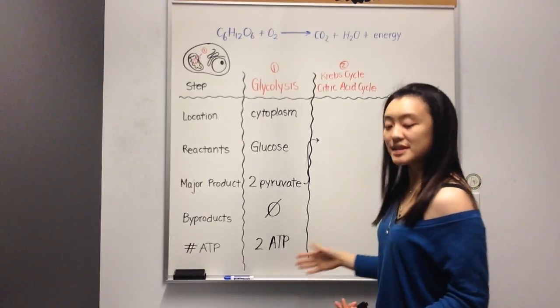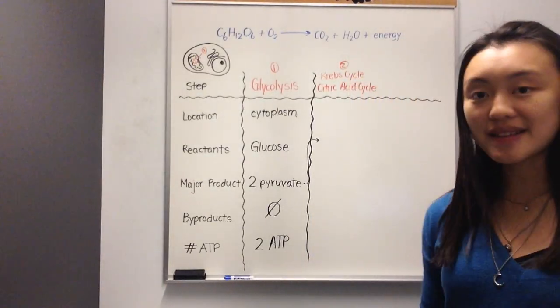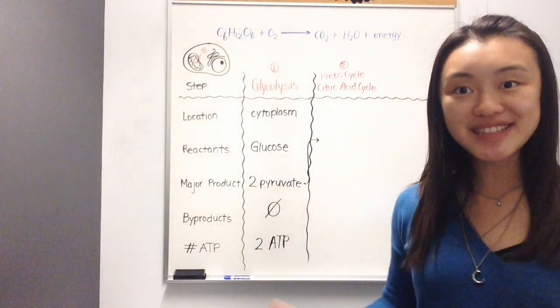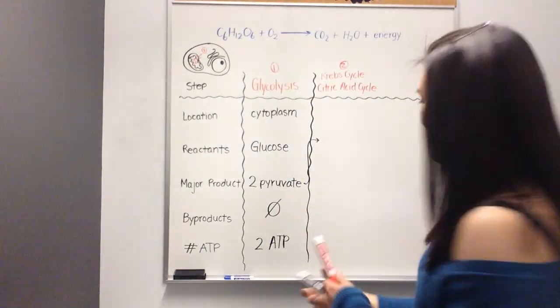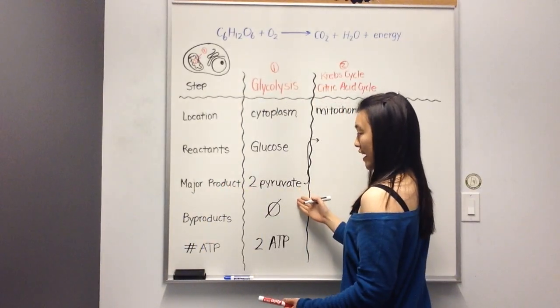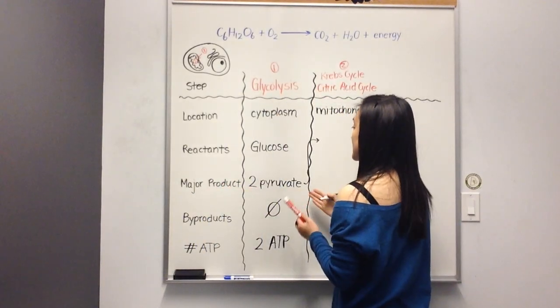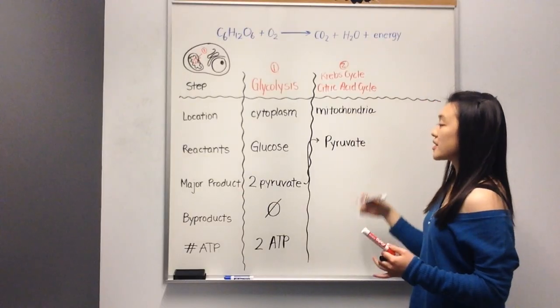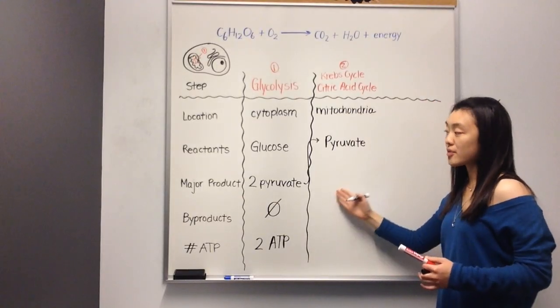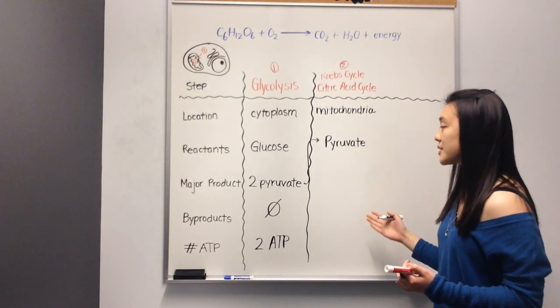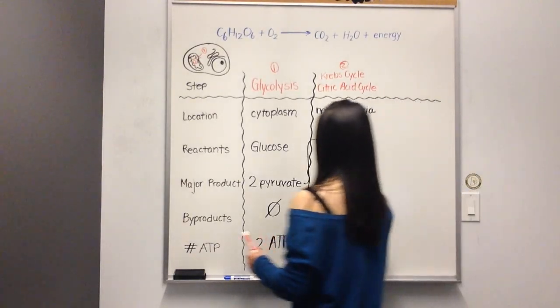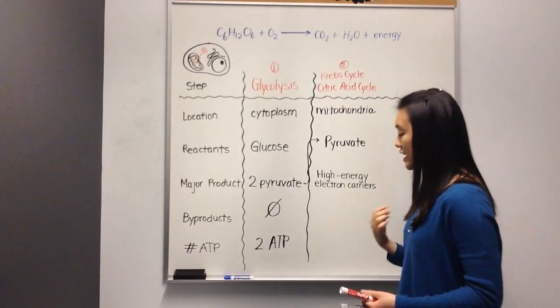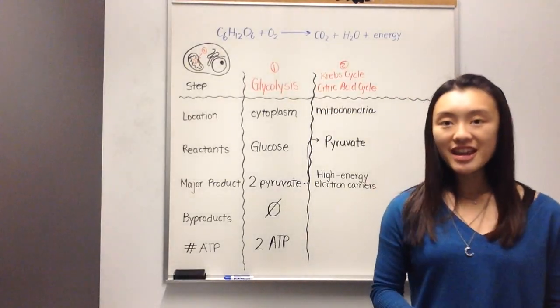Again, the Krebs cycle or the citric acid cycle does not take place in the cytoplasm anymore. We've moved on from the cytoplasm into the powerhouse of the cell, which you may remember is the mitochondria. The two molecules of pyruvate that we produced during glycolysis will then move on to be the reactants of our next reaction. As a result of the Krebs cycle, pyruvate will become a product. In this case, pyruvate will turn into some high-energy electron carriers.